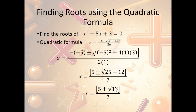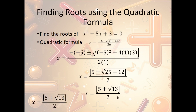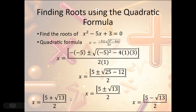There is no perfect square root of 13, so we leave it as is. With the plus or minus, we split into two roots: 5 plus square root of 13 over 2, and 5 minus square root of 13 over 2. Anytime you see plus or minus, that means we're going to add it and subtract it — so we do both. These are our two roots.